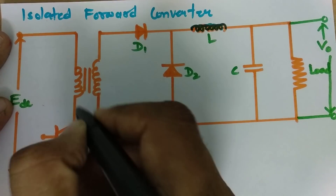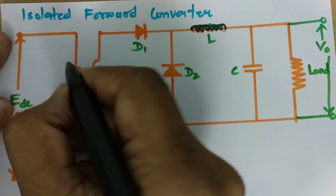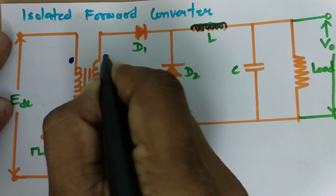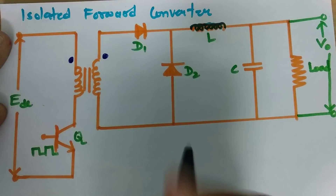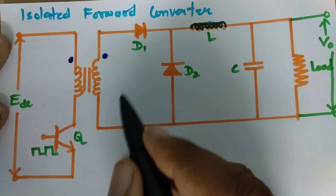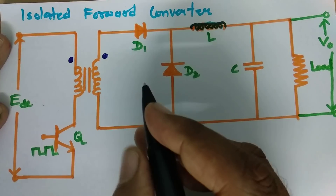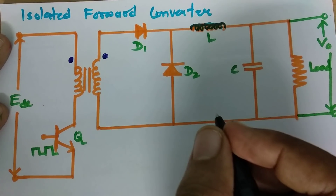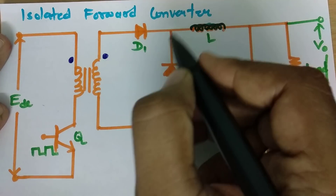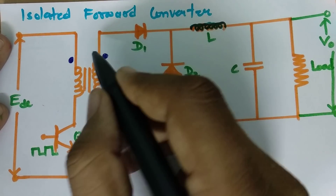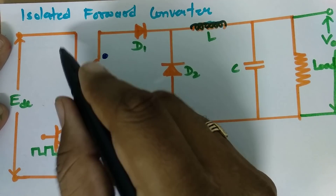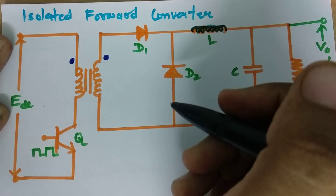The first basic difference is the transformer. The winding of this transformer is in the same direction, so the dot polarity is in the same direction. Because of this dot polarity, when primary current is flowing, at the same time there will also be a flow of secondary current. In the flyback converter, when primary current flows there is no secondary current, and when secondary current flows there is no primary current. But in the isolated forward converter, the same direction winding means primary and secondary currents flow simultaneously.